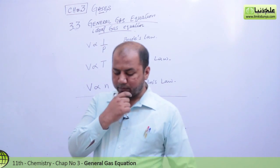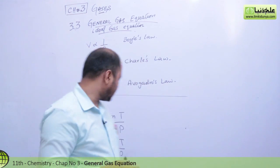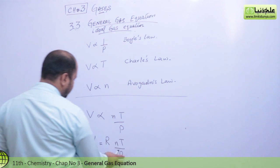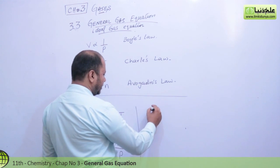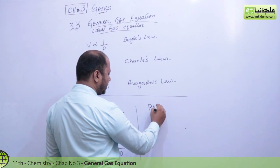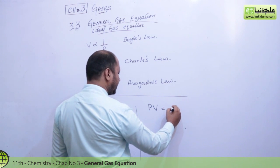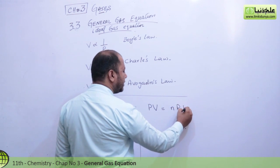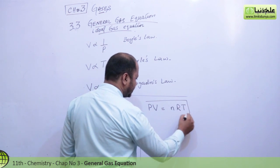R will be multiplied with nT over P. You can convert this equation by taking P to the other side, so it becomes PV equals nRT. That becomes the general gas equation.